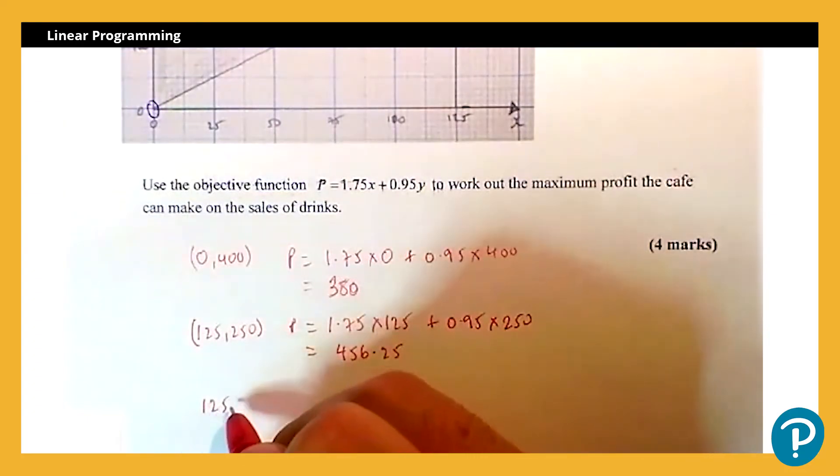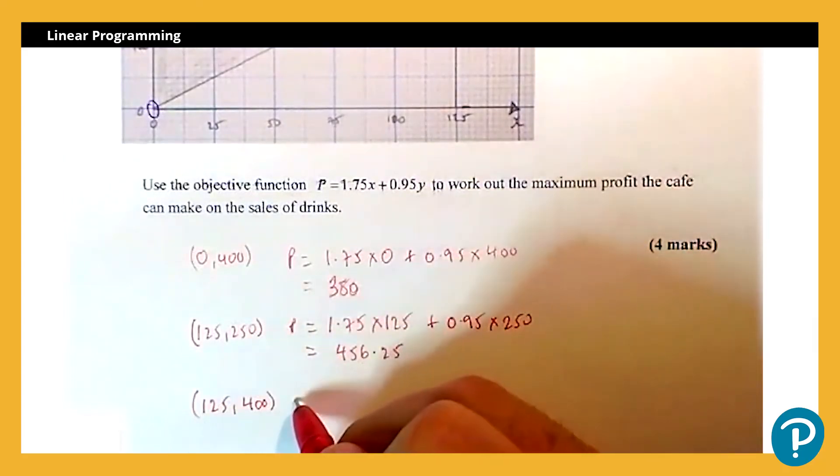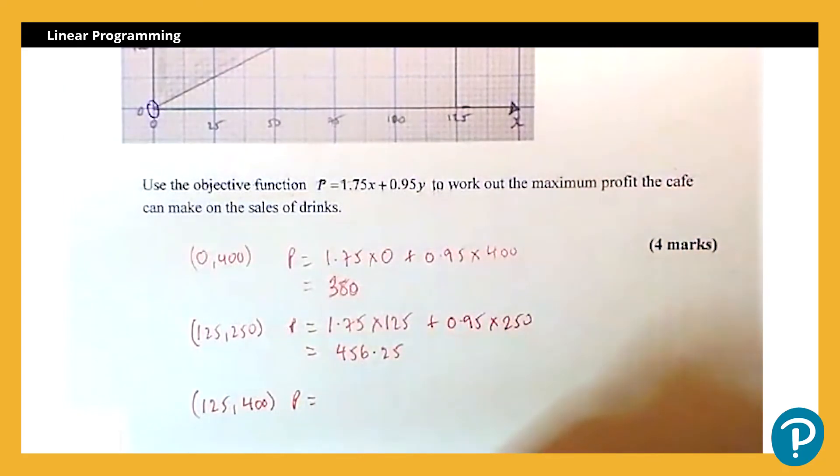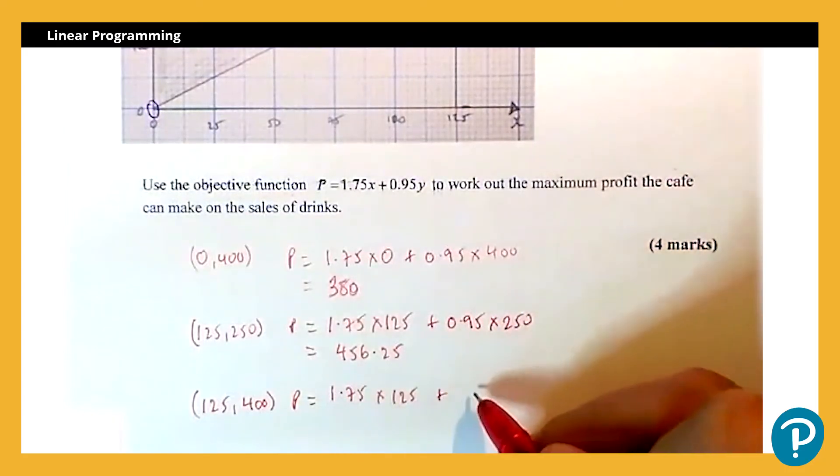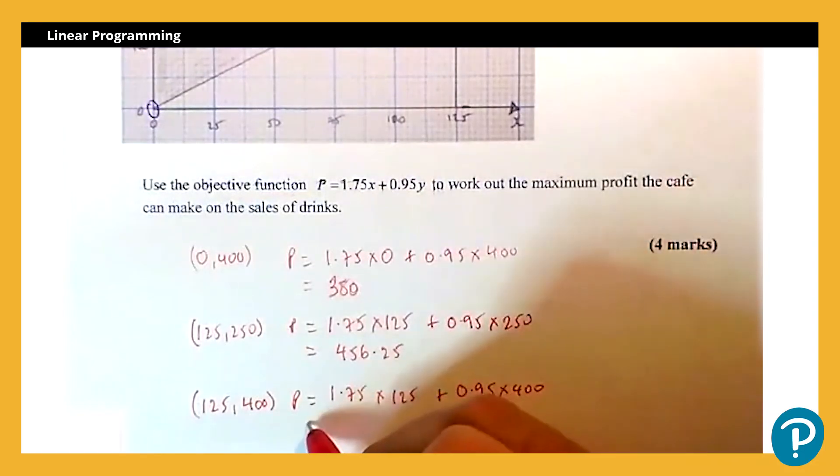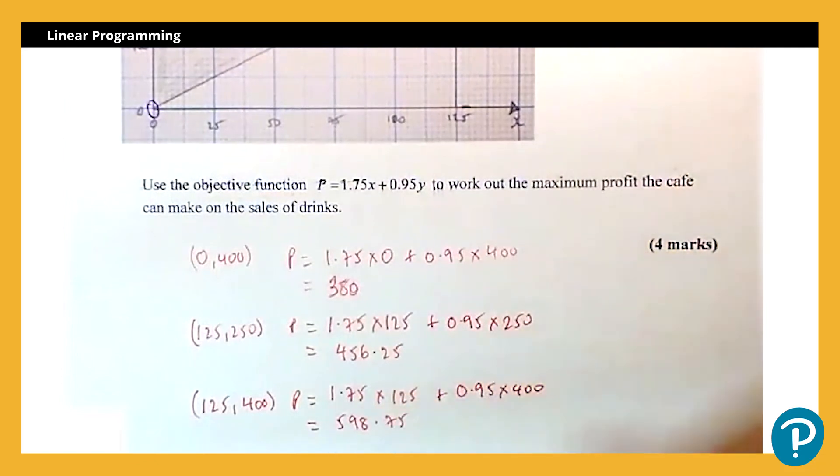And then the final one of our coordinates we're going to look at is the coordinate (125, 400). So P = 1.75 multiplied by 125 plus 0.95 multiplied by 400, and that gives me 598.75 pence.